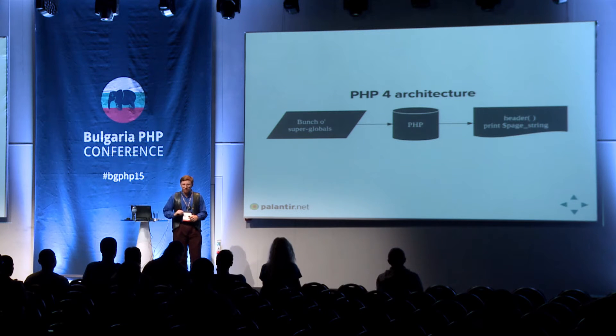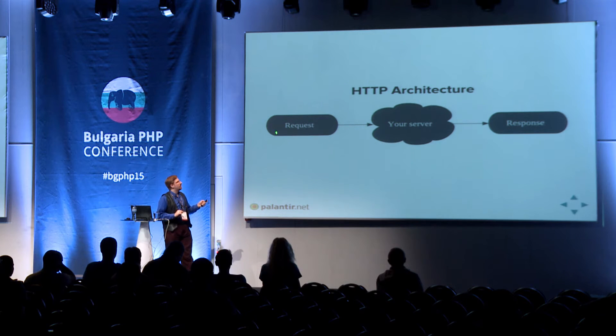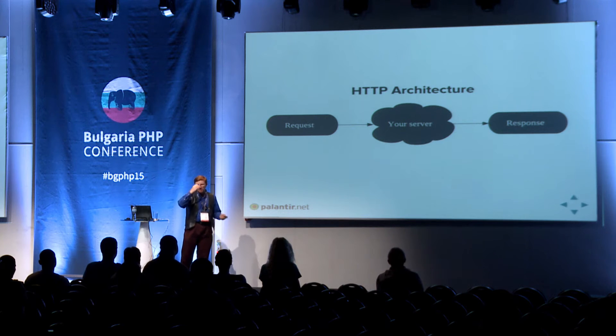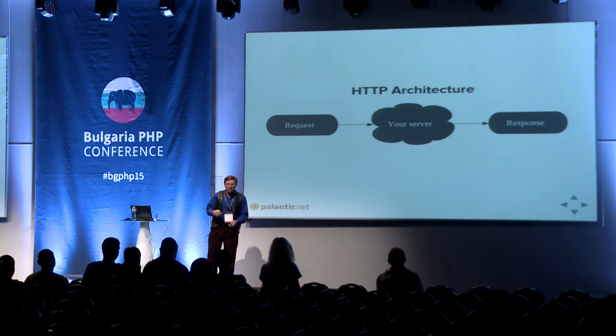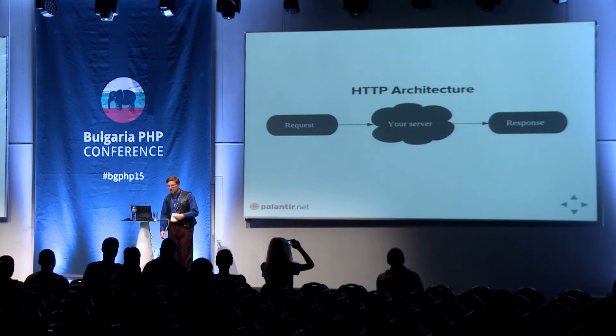The process starts up, you have a bunch of superglobals that get created, and your code does stuff, whatever stuff that is, and stuff comes down to calling the header function and printing content out. Hopefully in that order, because if you get that order wrong, weird things happen and stuff breaks in mysterious ways. Problem: that's not actually how the web works. The web — by which I mean HTTP — looks more like this: you have a request message that comes in, your server does some kind of black magic, whatever your code is supposed to be, and a response message comes out. We're not talking about printing things, we're talking about message passing. And for Drupal 8, we said this is where we need to be — this is how the web actually works, this is our architecture.